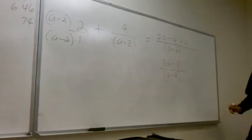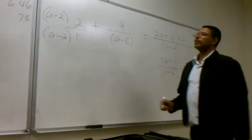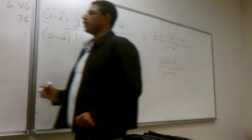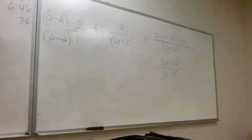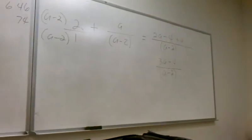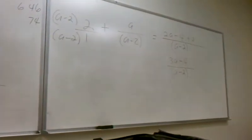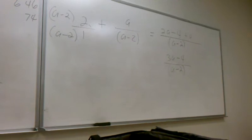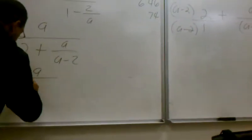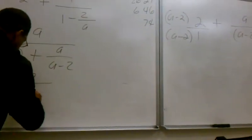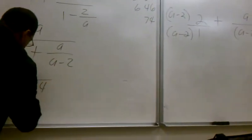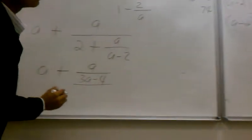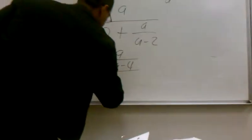Step 2 done — let's move on to step 3. So now this becomes a over a minus 2, plus a divided by 3a minus 4 over a minus 2.